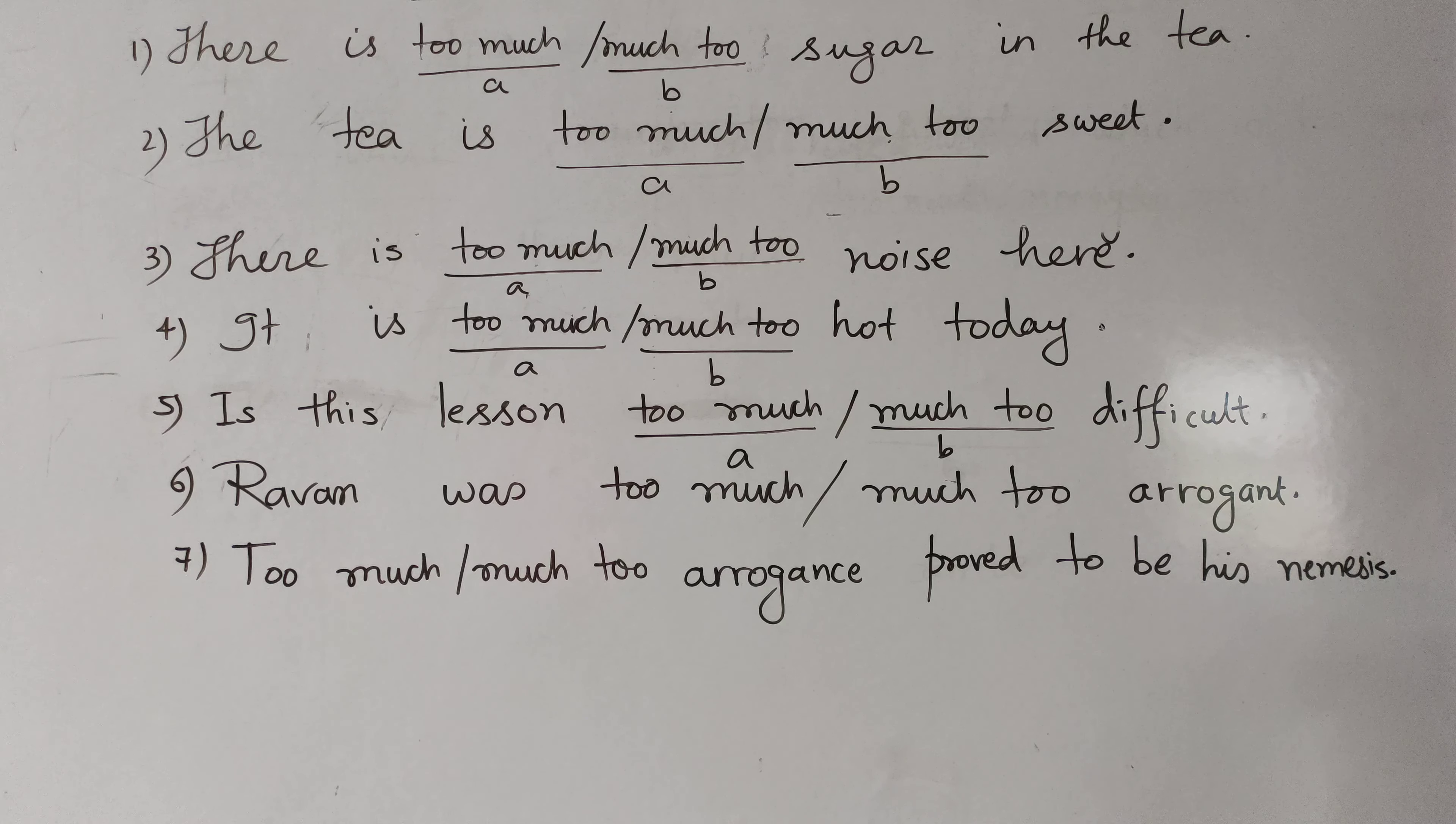Sentence No. 1. There is dash sugar in the tea. Too much sugar or much too sugar? There is too much sugar, there is much too sugar in the tea. What do you think? What will you choose? Okay. Most probably, you will choose A.